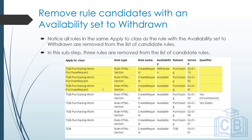The withdrawn rule has an additional capability — it also removes any other rules that match its properties. The sorting step ensures the top-ranked version (02.01.11) is preserved, while the three withdrawn-related candidates are discarded. So the top rule remains available while the withdrawn ones and their matches are removed.